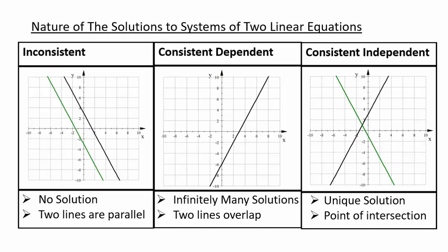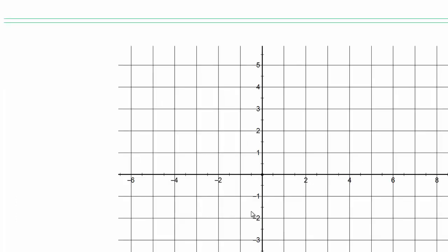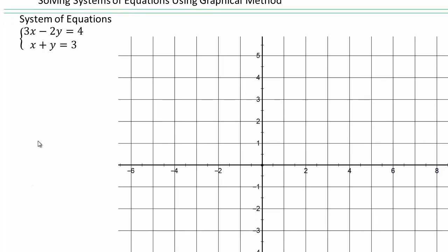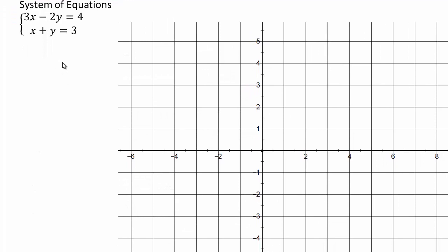Let's look at concrete examples. The first method for solving a system of equations is the graphing method — you simply graph the two lines and read off the solution. Remember, two points determine a line, so for each equation make a table of points and graph it.